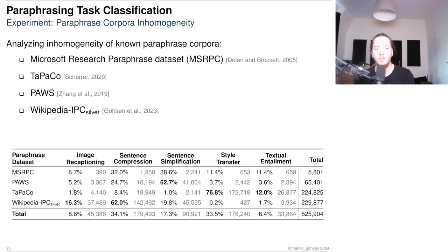Here we can see the frequencies of paraphrases that were classified to belong to one of the five considered tasks from the four datasets. We identified strong biases toward specific tasks in PAWS, TAPACO and Wikipedia-IPC. That Wikipedia-IPC contained the most image captions is not surprising since it was compiled of image captions from Wikipedia.